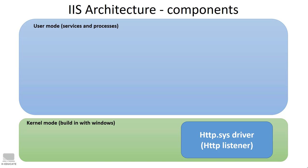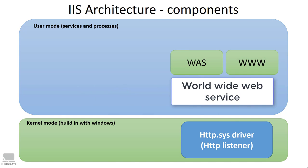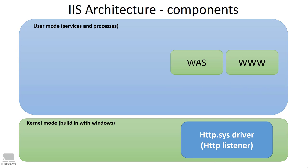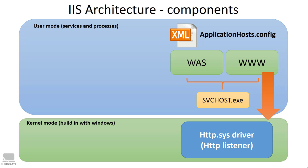In the user mode, we mainly have two services: the Windows Activation Service (WAS) and the World Wide Web Publishing Service (WWW). Both services run in the same svchost.exe process. These services are responsible for reading the application host configuration file, which contains settings like bindings, websites, application pools, and so on. The WWW service tells the HTTP listener in the kernel group, via the HTTP APIs, to listen on the IPs and ports found in that configuration file.